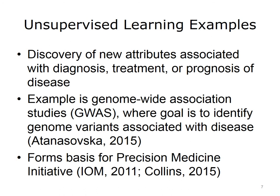A common use of unsupervised learning is the discovery of new attributes that may be associated with clinical questions, such as diagnosis, treatment, or prognosis of disease. An example of unsupervised learning is the Genome-Wide Association Study, or GWAS, where the goal is to identify genome variants that might be associated with a particular disease. These types of investigations form the basis of precision medicine, where the goal is to identify causes and factors associated with disease more precisely, and develop more targeted treatments.